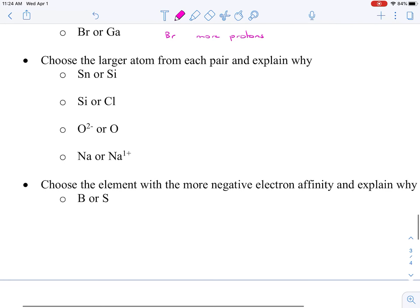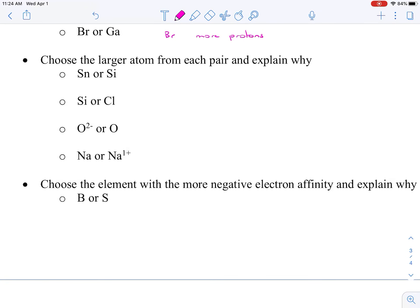Choosing the larger atom from each pair and explaining why. So we have Sn or Si. Sn is tin and Si is above it, so which one's going to be larger? That's going to be Sn, and we're going to say more layers, more layers of electrons. Now Si or chlorine, we're going to say Si is the larger one, and that's due to fewer protons. We have the same number of layers but we have fewer protons.